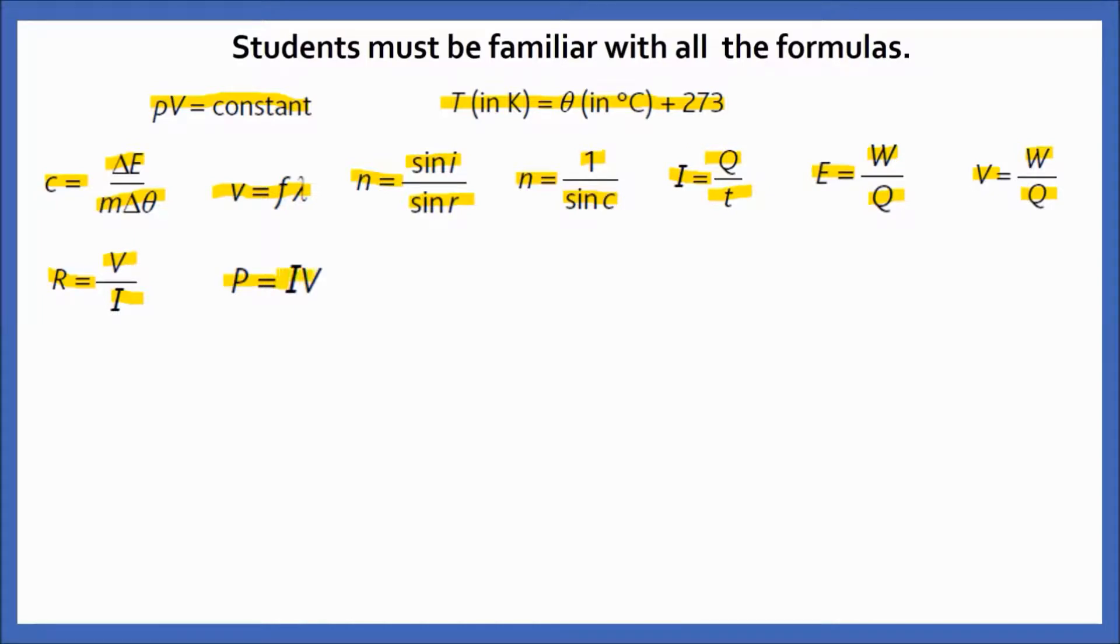Power = IV, that is current times voltage. Energy = Pt or IVt. Here is another equation which is included in your syllabus. This can be used when two resistors are used as a potential divider: R₁/R₂ = V₁/V₂. Transformer equation: Vp/Vs = Np/Ns, where s means secondary, p means primary, V stands for voltage, and N stands for number of turns in the respective coil.